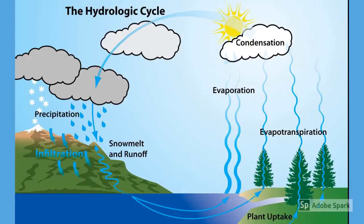The water cycle, also known as the hydrologic cycle, shows how the Earth's water is refreshed through a series of processes. Water vapor evaporates into the air where it condenses into clouds and eventually precipitates back to the Earth through rain or snow. And then the cycle continues.